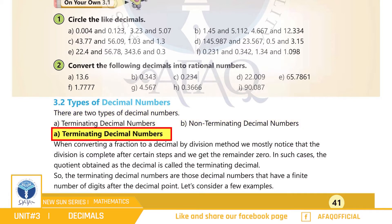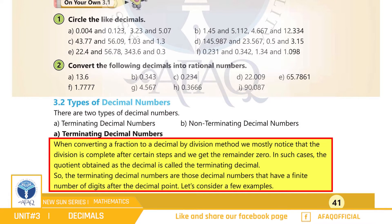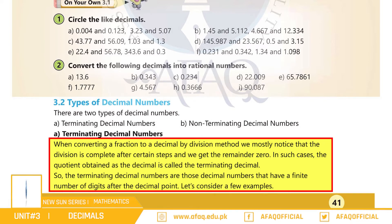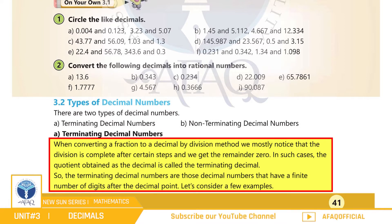Terminating Decimal Numbers: جب ہم کسی بھی fraction کو decimal میں division method کے تحت convert کرتے ہیں تو کچھ steps کے بعد remainder zero ہو جاتا ہے۔ ان cases میں جو quotient حاصل ہوتا ہے اسے terminating decimal کہتے ہیں۔